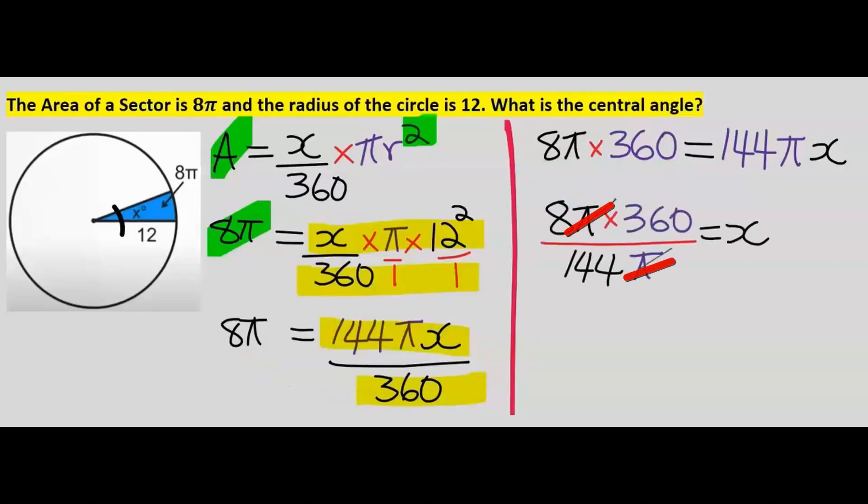Next we cross multiply. 360 will move to multiply 8π and we're going to get this. Next, π will cancel out. Simplifying further, the central angle is 20 degrees.